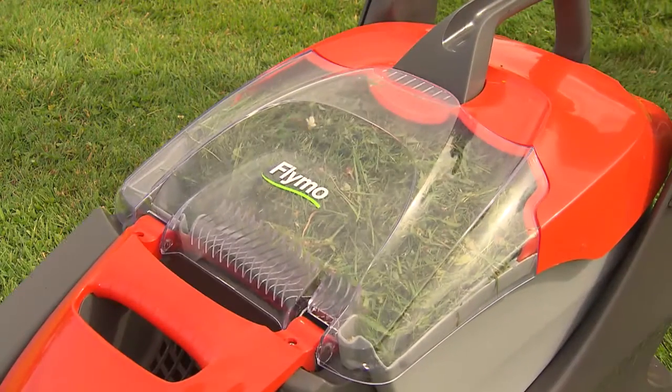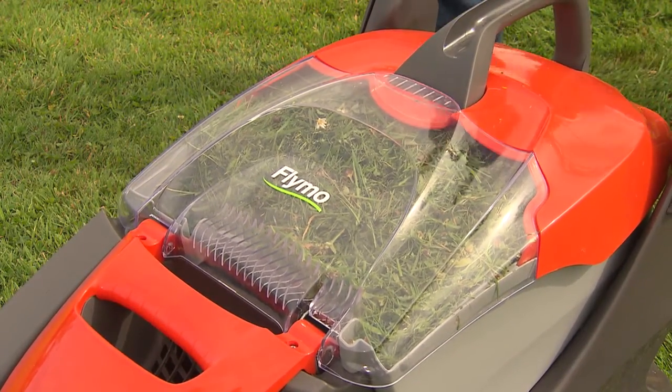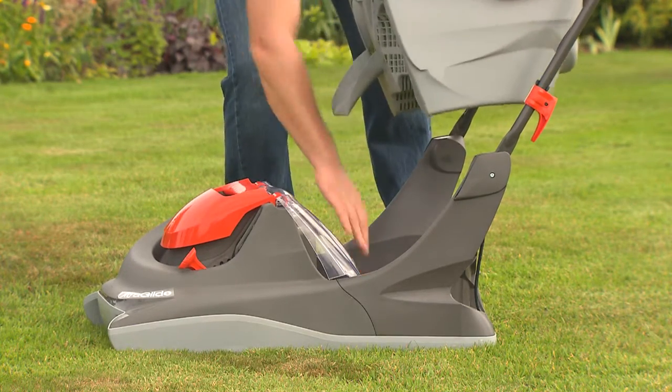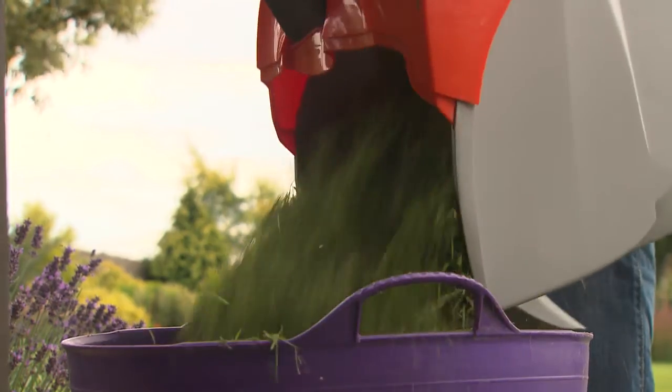The continuous airflow through the collection box helps compact the cuttings, giving the UltraGlide an ultimate collection ability of up to 30 litres of grass, collecting more grass than ever before.